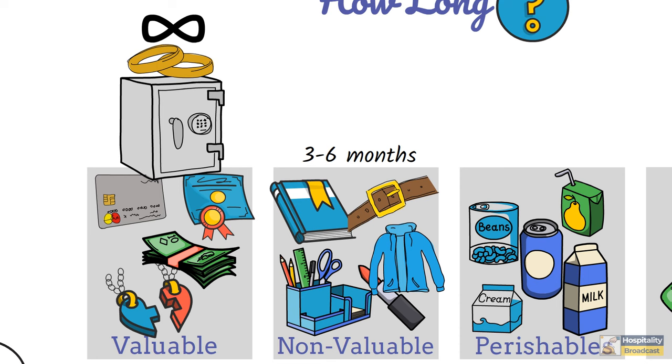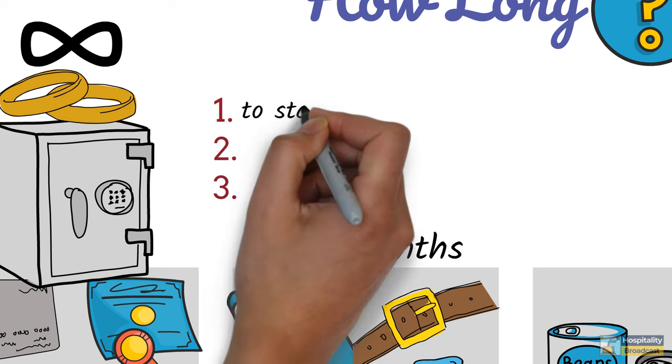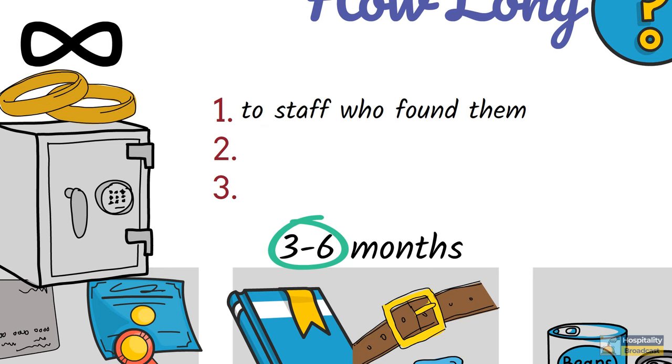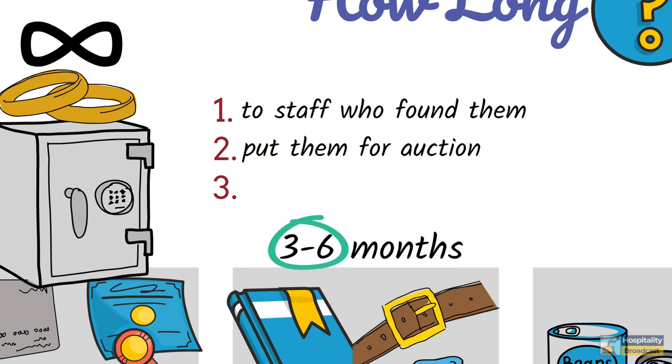Now what hotels do with them after the retaining period is over? Normally these items are disposed in 3 ways. The most common is that housekeeping executives release or offer these items to the staff member who found them.